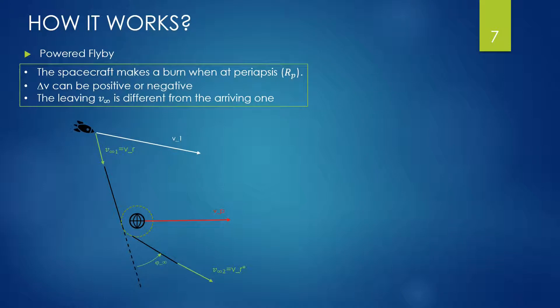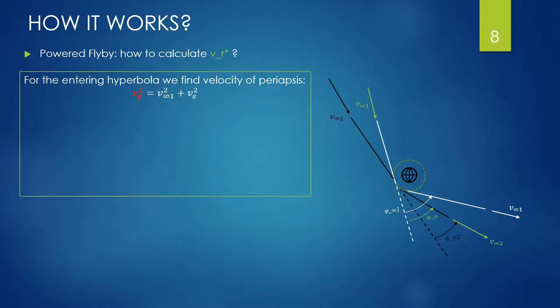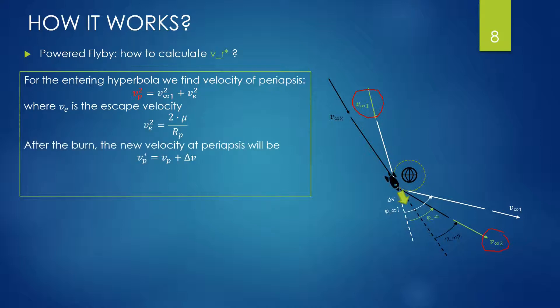Now we make a step forward. There is further the possibility to use a burn when the probe approaches the periapsis, here. In this case also, the modulus of VR changes. Let's see how to calculate the leaving velocity V2. We want to determine the leaving VR, we call it V-infinite2, by knowing the entry velocity V-infinite1. The velocity of the periapsis close to the planet is given by this expression: V-infinite squared plus V-escape squared. The escape velocity is given by this formula where mu is the one of the planet. Then we apply the burn, so our speed increases by delta V, and we call this new speed Vp star.